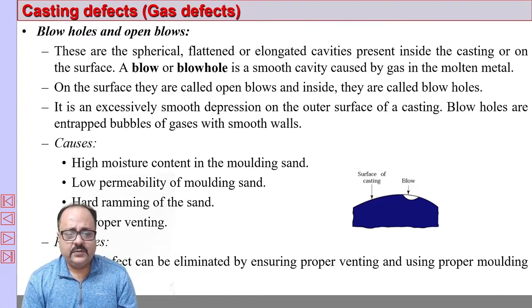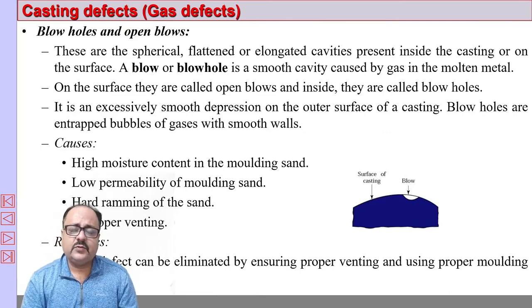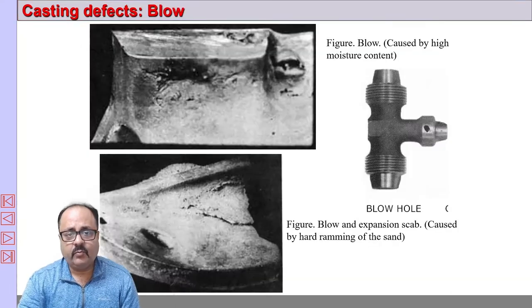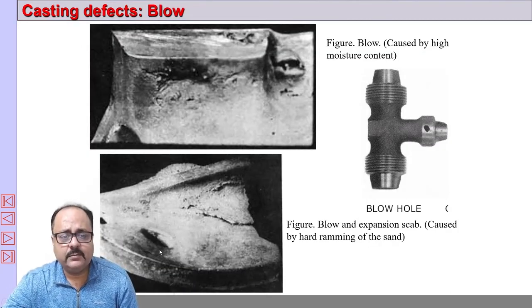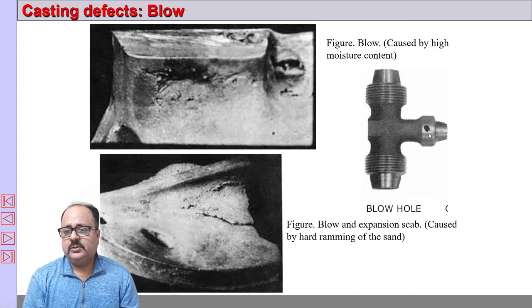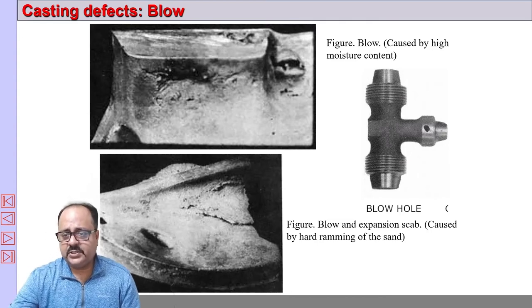The causes are: high moisture content, low permeability, very hard ramming, and improper venting. If you are not venting properly, gases cannot escape and will be entrapped in the casting. The remedy is to use proper venting and ensure permeability is suitable for your casting. As you can see here, these are various types of blow holes — normally spherical in nature. These are not sinkage defects; they are blow holes.